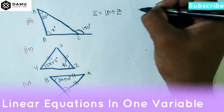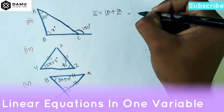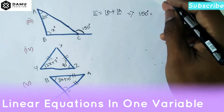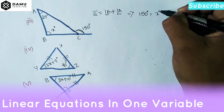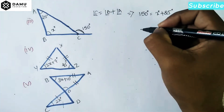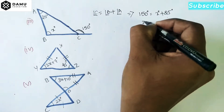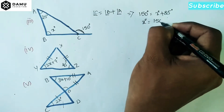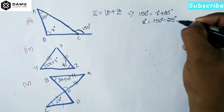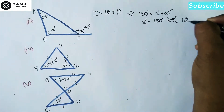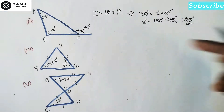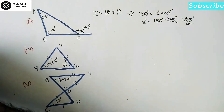So 150 degrees will be equal to X degrees plus 25 degrees. Then X degrees will be 150 degrees minus 25, which gives us 125 degrees. So X equals 125 degrees in the first one.